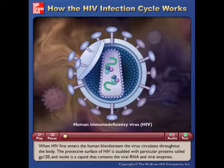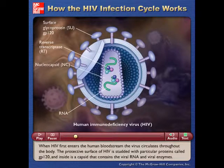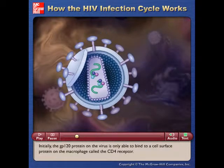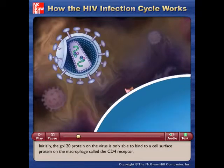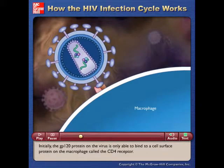When HIV first enters the human bloodstream, the virus circulates throughout the body. The protective surface of HIV is studded with particular proteins called GP120, and inside is a capsid that contains the viral RNA and viral enzymes. Initially, the GP120 protein on the virus is only able to bind to a cell surface protein on the macrophage called the CD4 receptor.